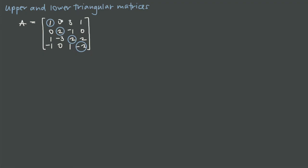Here we have our main diagonal again, with these two zeros. If the other entries above the main diagonal were also zero, we would have a lower triangular matrix. Keep in mind that you can still have zeros elsewhere in the matrix. The only requirement is that all values below the diagonal (for upper triangular) or above it (for lower triangular) are zero.